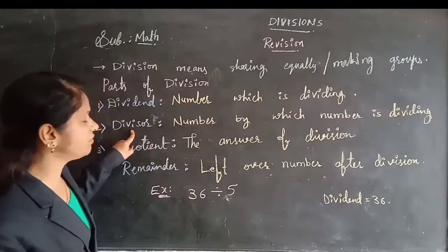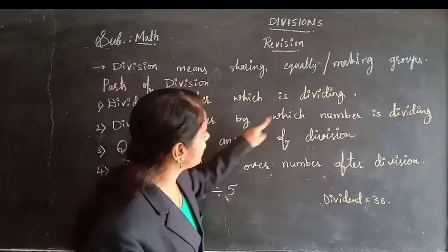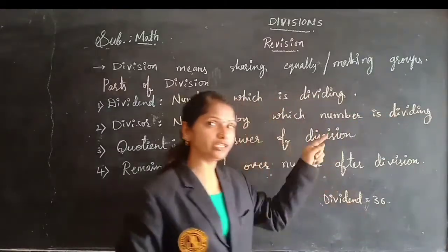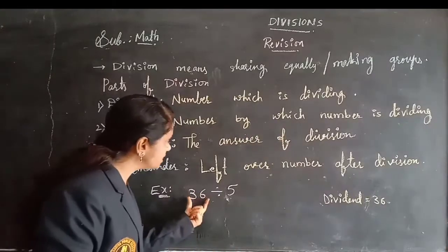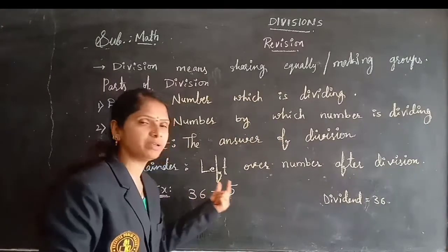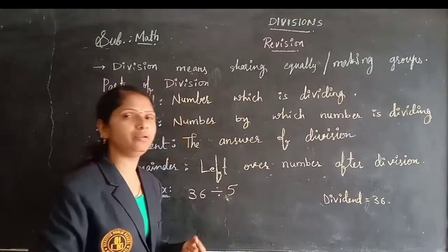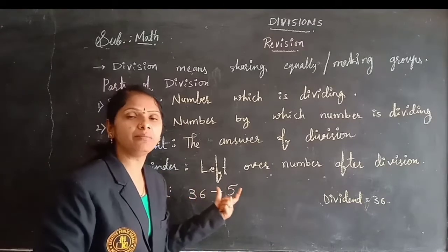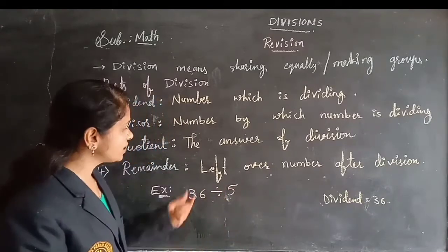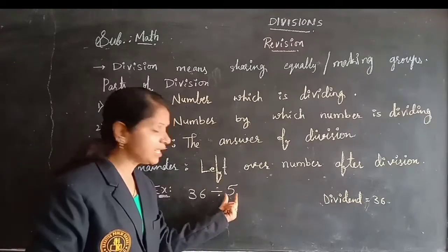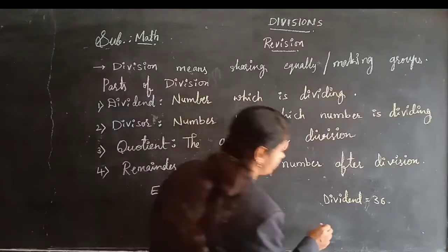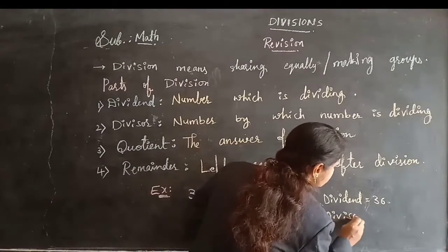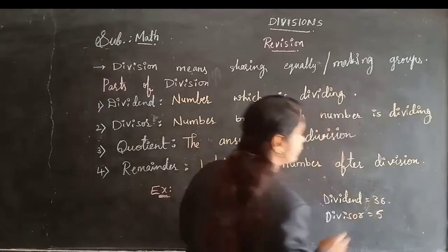And divisor means the number by which we are dividing. This 36 — by which number are we dividing? By 5 we are dividing. The 36 we are dividing by 5, so 5 is the divisor of that division. Divisor equals 5.